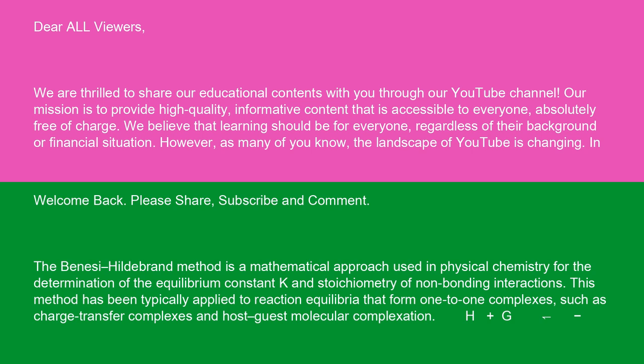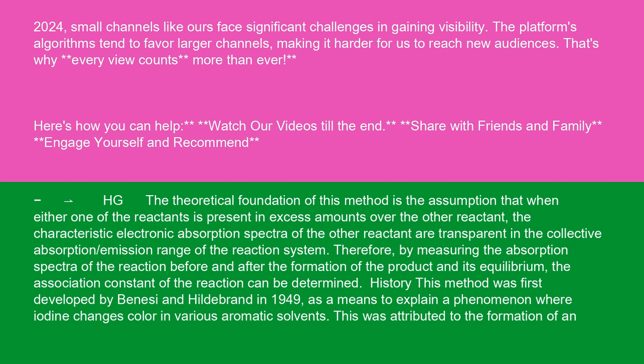H plus G minus HG. The theoretical foundation of this method is the assumption that when either one of the reactants is present in excess amounts over the other reactant, the characteristic electronic absorption spectra of the other reactant are transparent in the collective absorption/emission range of the reaction system.